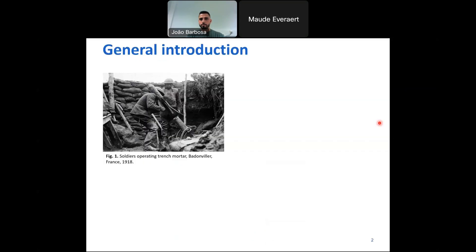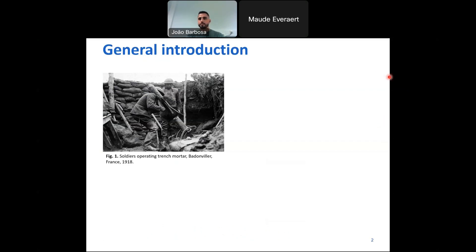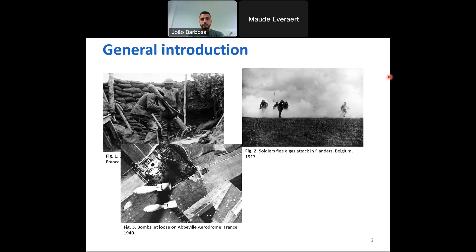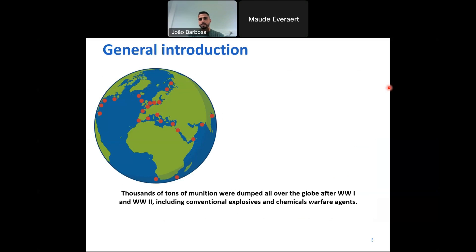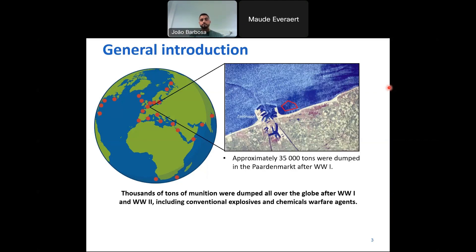As background, the history of humankind has been marked by several armed conflicts, from the 1st and 2nd World Wars up to more recent ones such as the conflict in Ukraine and many other places, as we are currently going through a time of quite some military tension. After the 1st and 2nd World Wars, thousands of tons of munition were dumped all over the globe, including both conventional explosives and chemical warfare agents. One of these dump sites is located off the Belgian coast, referred to as the Paardenmarkt, and it's estimated that approximately 35,000 tons of munition — mainly chemical munition — were dumped there after the 1st World War.